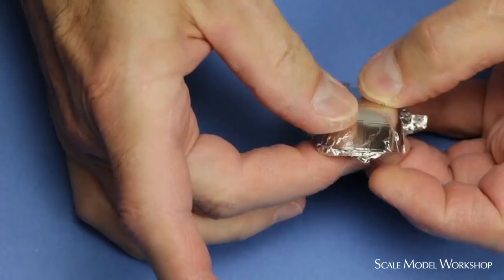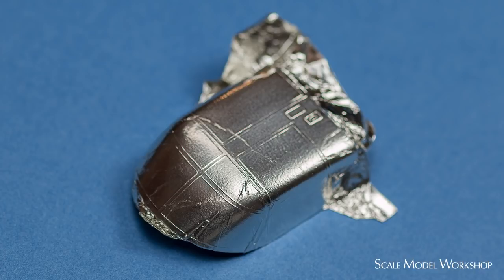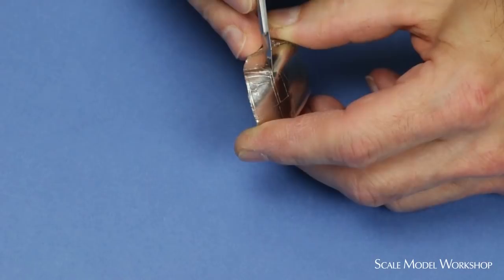The framework of the stock canopy is clearly visible through the foil. Using a nice sharp blade, follow the outline of the raised detail.